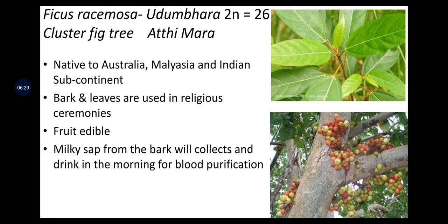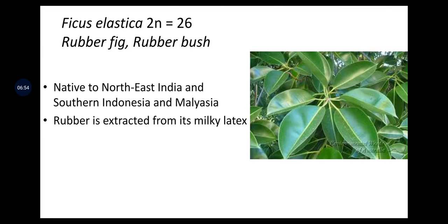Ficus racemosa (2n = 26) is the cluster fig tree, known as Udumbara or Attimara in Karnataka. It is native to Australia, Malaysia, and the Indian subcontinent. Bark and leaves are used in religious ceremonies. Fruits are edible. Milky sap from the bark is collected and consumed in the morning for blood purification, indicating medicinal properties.